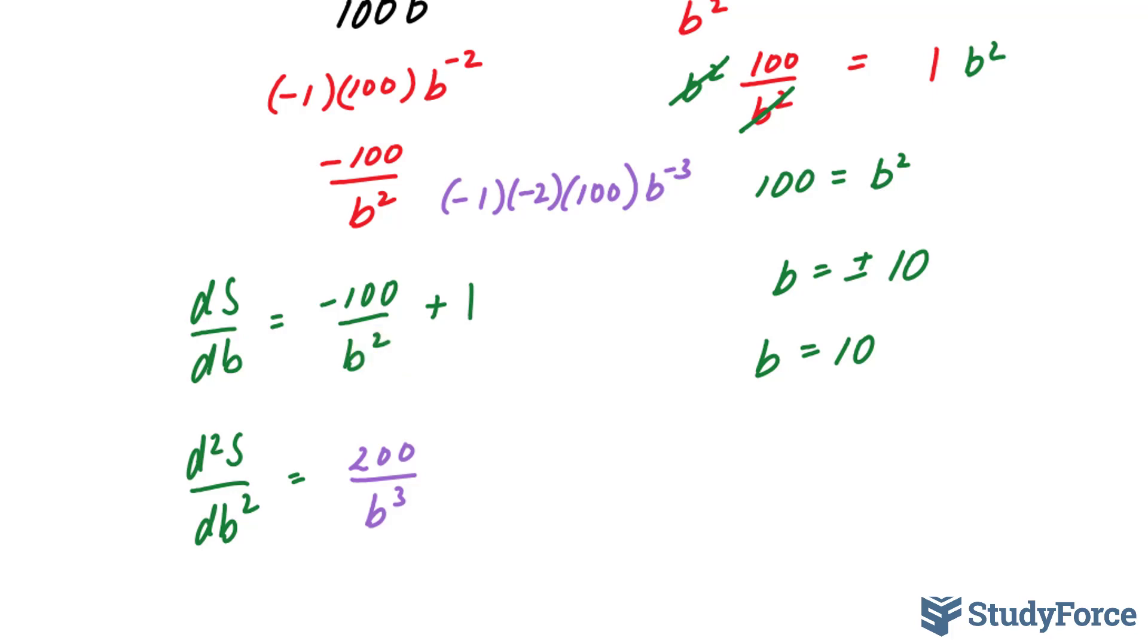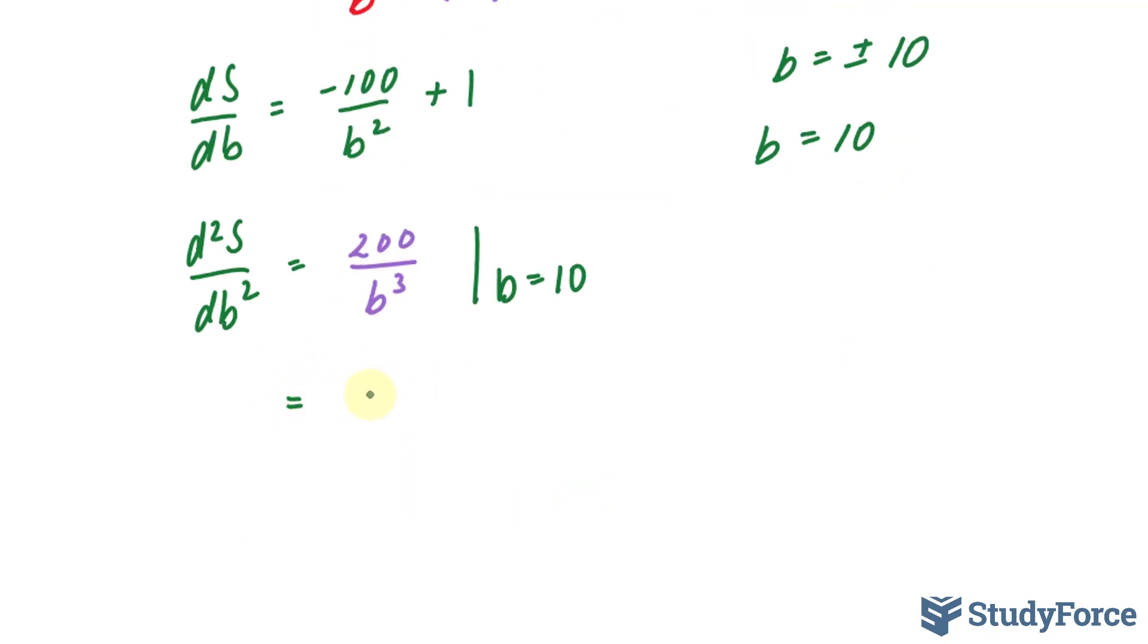And now I will substitute B is equal to 10 into here. 200 over 10 to the power of 3 is 1000, and this is 1 over 5. This number is positive, meaning that 10 is a minimum point.